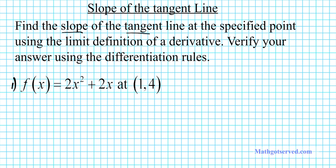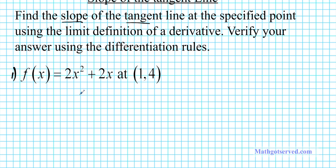What this problem is asking us to find is f prime of 1. f prime of 1 means the slope of the tangent line at x equals 1. The derivative is the slope of the tangent line anywhere, and when you set it to 1 it tells you the slope of the tangent line at x equals 1. There are two steps to finding the derivative at a point, so let's write them down.